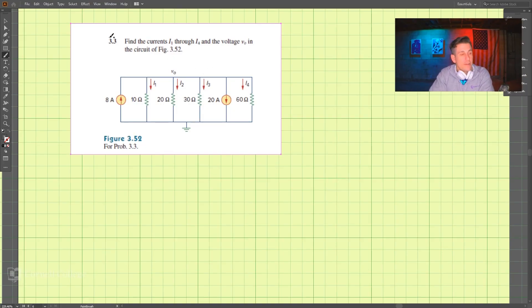All right, so let's do this problem. We have 3.3 here, and what we're looking to find are the currents I1, I2, I3, I4, so that's what we want to find, as well as the voltage at this node.